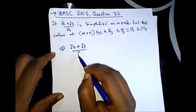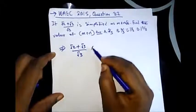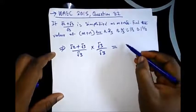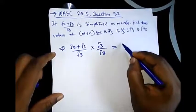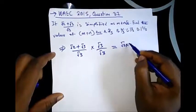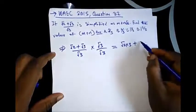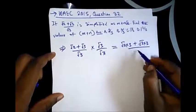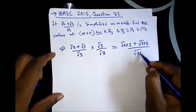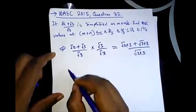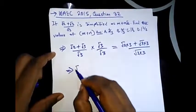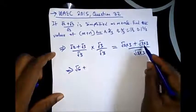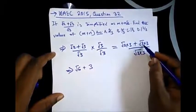This would give us (√2×√3 + √3×√3)/(√3×√3). Let's just write this down so you could understand it better. So from here we have √6 plus this would be 3, which is 3×3=9 and the root of 9 is 3.